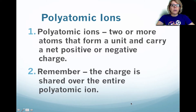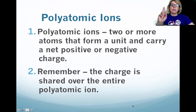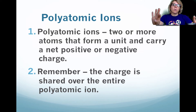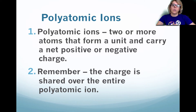Now we want to talk about polyatomic ions. Notice that poly means many, so we're talking about many atoms — typically two or more types of atoms — and together they carry an overall net charge that's either positive or negative. As a result, we tend to put parentheses around them to show that there's an overall charge with those two types of elements.